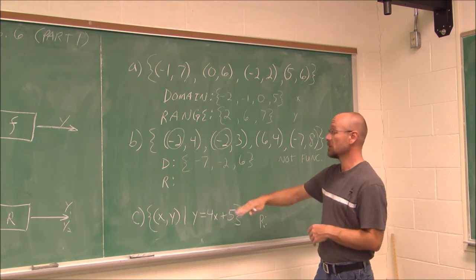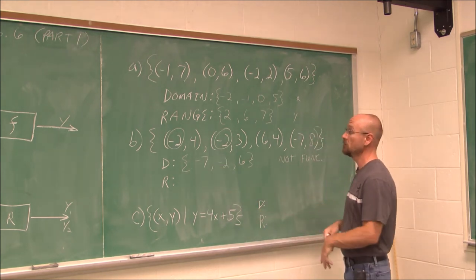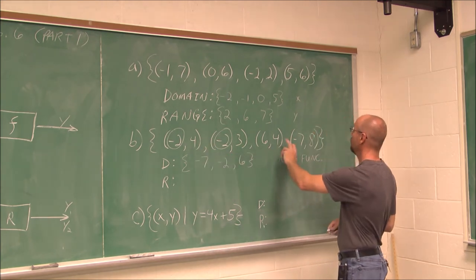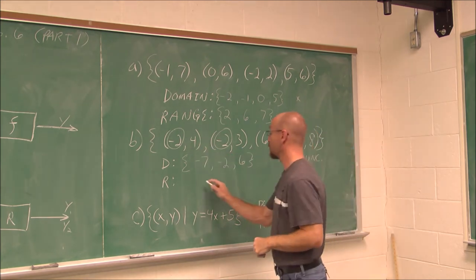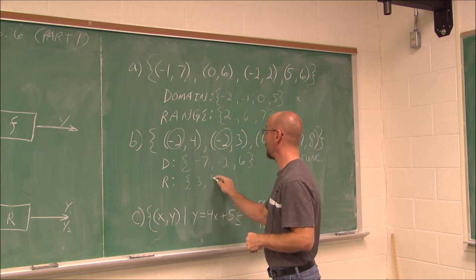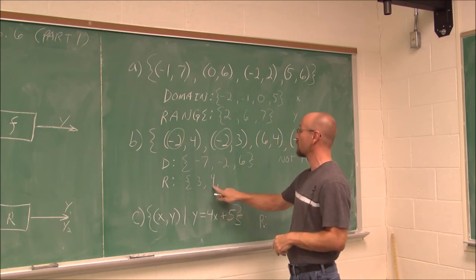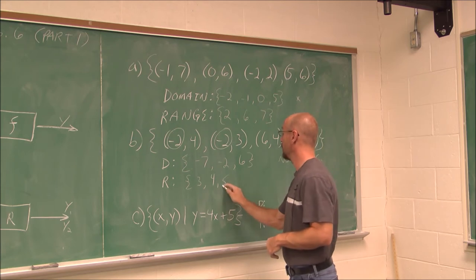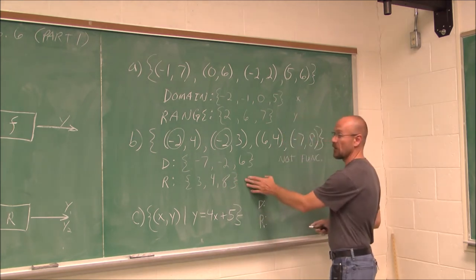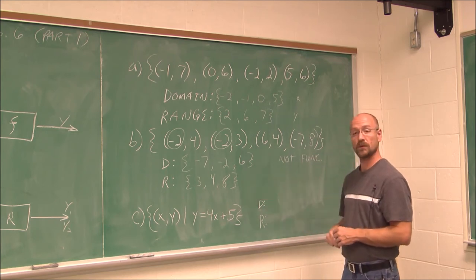We can still determine the domain and range of any relation or function. Our range: I have the values 4, 3, 4, and 8. My smallest value is 3, followed by 4 — which repeats, and that's OK for range — and finally 8. So that would be my range {3, 4, 8} — the output values. These are the inputs and these are the outputs.